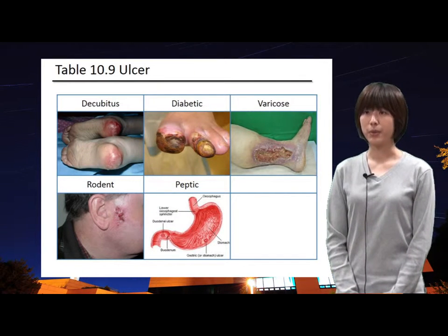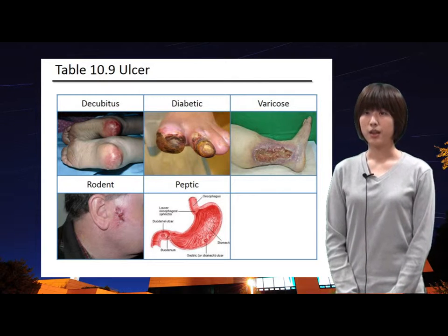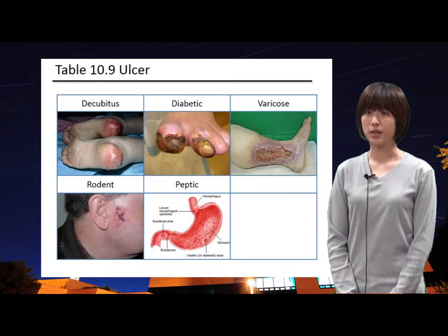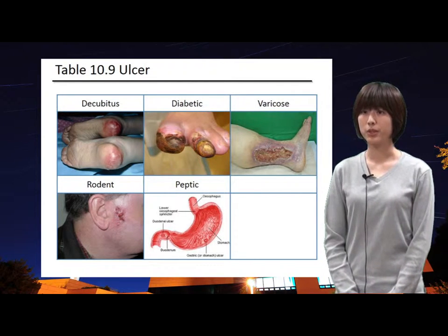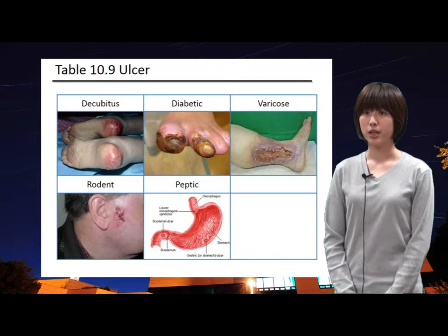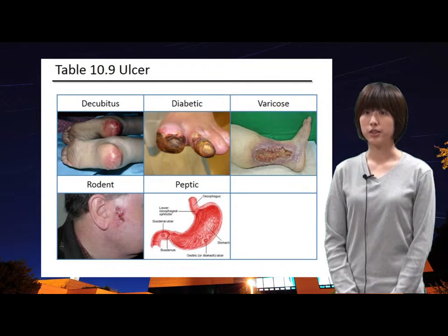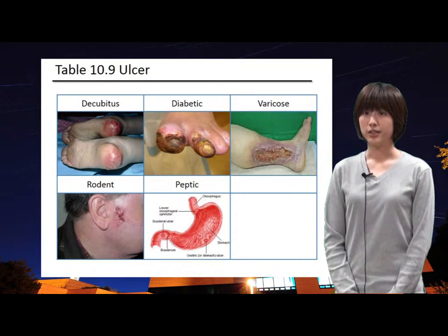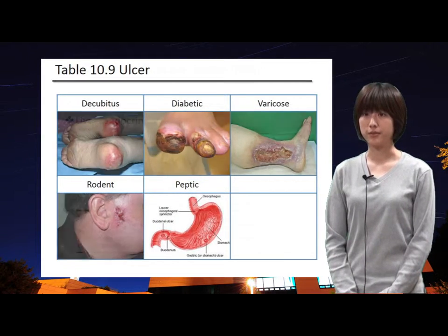Peptic ulcer is the ulcer of the digestive tract caused by digestion of the mucosa by acid and pepsin. It may occur in the duodenum or the stomach. When it occurs in the duodenum, it is called a duodenal ulcer, and the one occurring in the stomach is called a gastric ulcer. Generally, four times as many peptic ulcers arise in the duodenum as in the stomach itself.